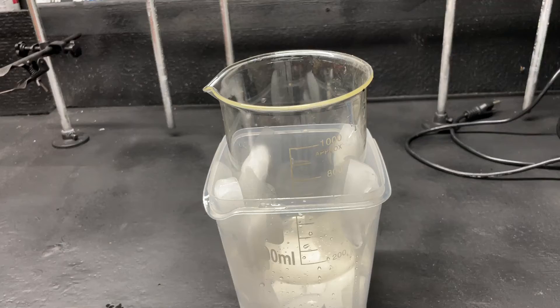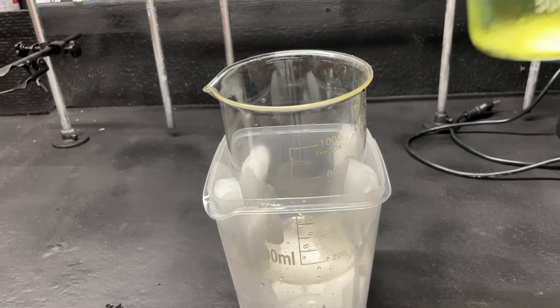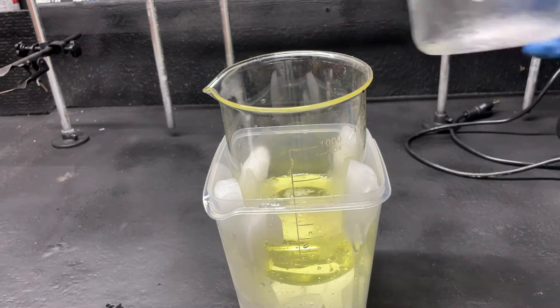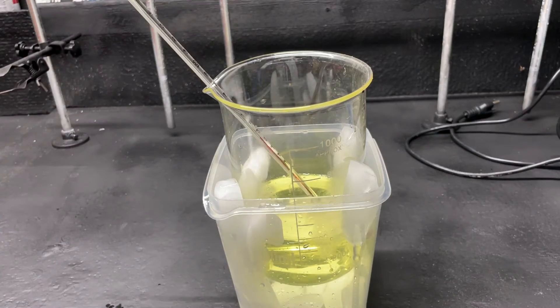First, to a thousand milliliter beaker, I'm adding 355 milliliters of 10% sodium hypochlorite solution and letting it cool to zero degrees Celsius.